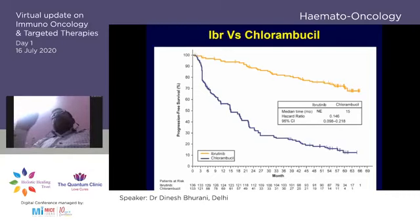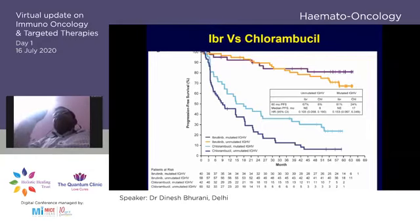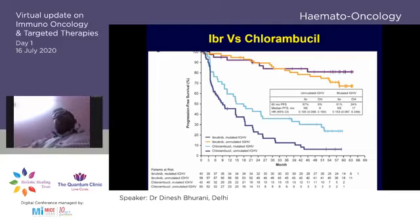With ibrutinib, the most important finding is that whether you are IGHV-mutated or unmutated, ibrutinib shows no major demarcation in outcomes. Unlike FCR, if you are using ibrutinib it does not make a big difference whether the patient is mutated or unmutated.